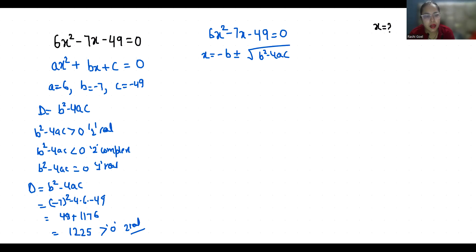So minus minus 7 plus minus square root of b² minus 4ac is 1225, we already calculated, by 2 times 6. So 7 plus minus square root 1225 is 35, by 12.